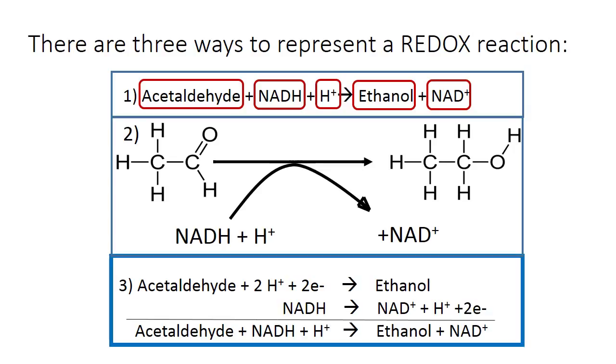Let's look at option three, where the reactants and products have been broken down into two half reactions. The top reaction here is the reduction half, and the bottom reaction is the oxidation half. We know this because of where the electrons appear in the half reaction.